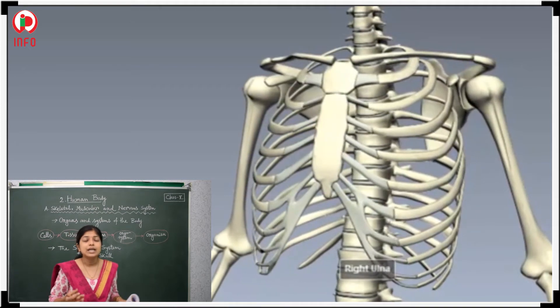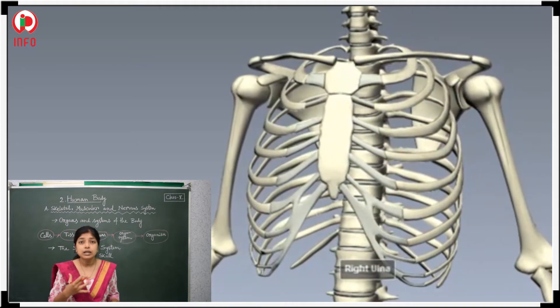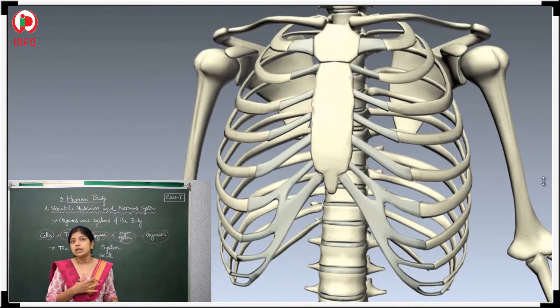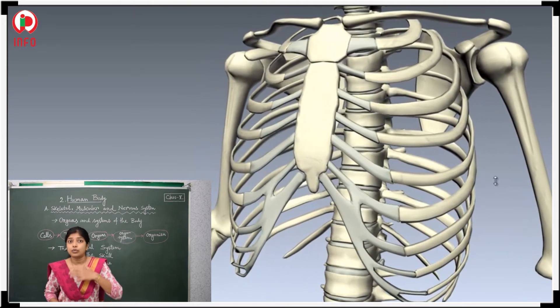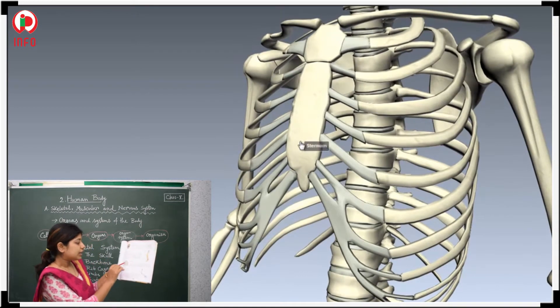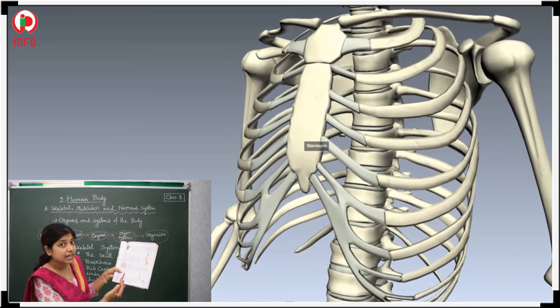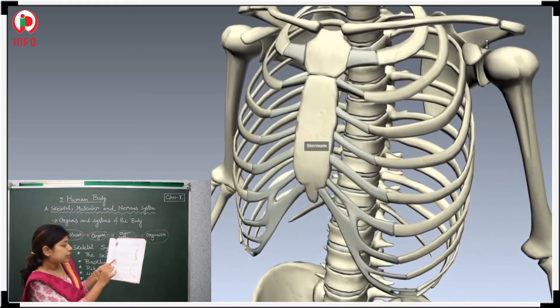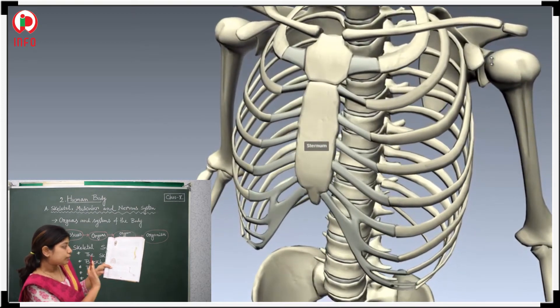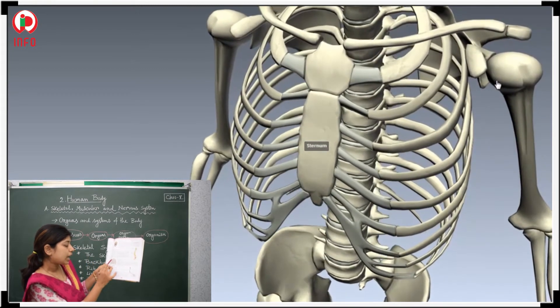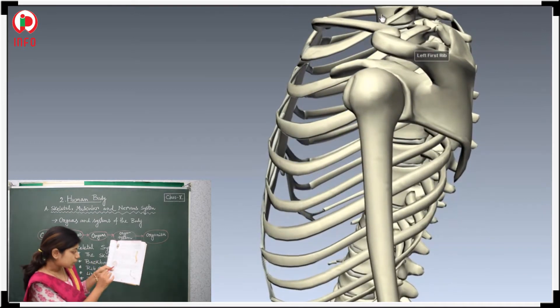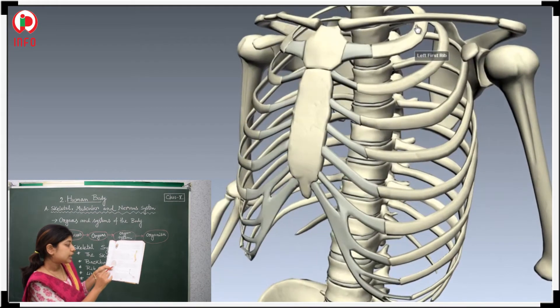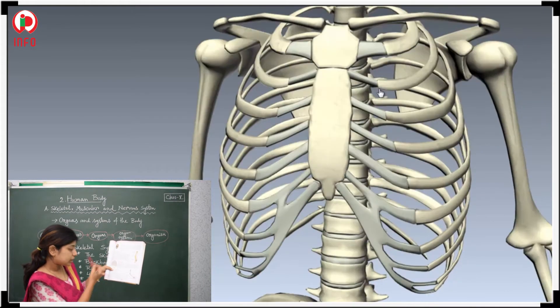What is the ribcage doing? It is protecting our lungs and our heart. With the help of this ribcage, we are able to protect our chest part. These different ribcage bones — one part connects to the backbone and another part connects to the breastbone. The last two bones are not connected to the backbone, only the floating bones.